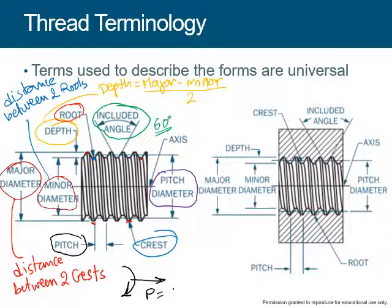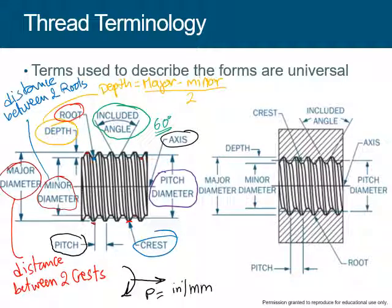When you turn your thread one turn, you move linearly an amount — this amount is called the pitch. It's the distance the nut moves when you turn it one turn. The axis is basically the center of the circle. The same exact features apply to this external thread.